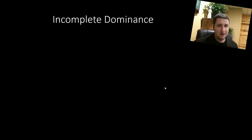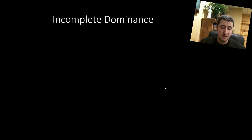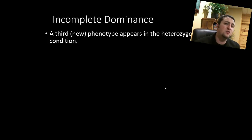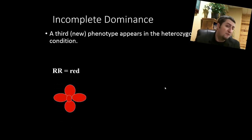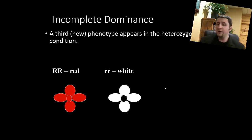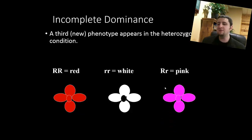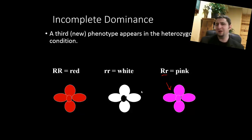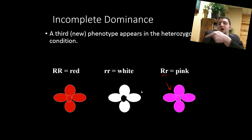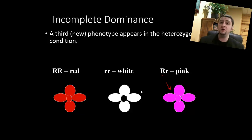Sometimes we get this concept called incomplete dominance, where we end up seeing both traits at the same time — a third phenotype that's sort of a mix of the other two. For example, red flowers (big R, big R) and white flowers (little r, little r) can mix together where we have one of each, and they end up being pink. To find out more about incomplete dominance, please follow the link here — it'll take you to a video a coworker made that explains how to use Punnett squares to show how incomplete dominance works.